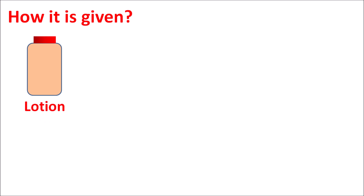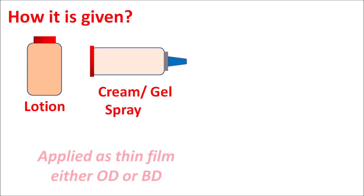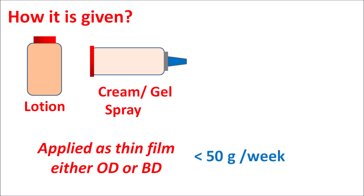This drug is available in different dosage forms: lotion, cream, gel, spray, and foam. When applied topically, the cream should be applied as a thin film, either once or twice daily. Treatment can be continued for up to two weeks to reduce inflammation. However, the weekly dose should be less than 50 grams in order to avoid suppression of the HPA axis.